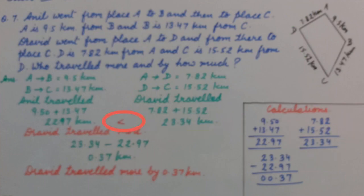We can compare 22.97 and 23.34 km. Clearly 23.34 km is greater, so Drawer travelled more. We got the first answer. But the second question is by how much? For that, we will find the difference of their distances. It is 23.34 minus 22.97, that is 0.37 km.